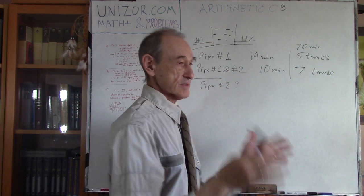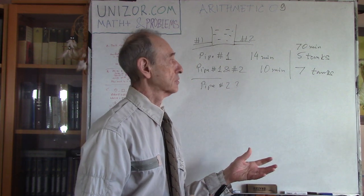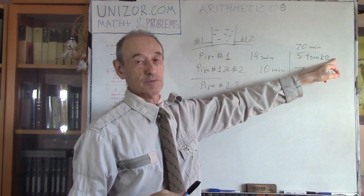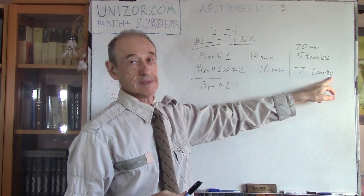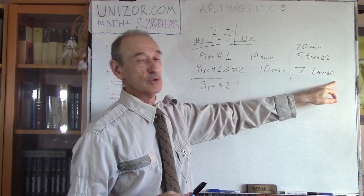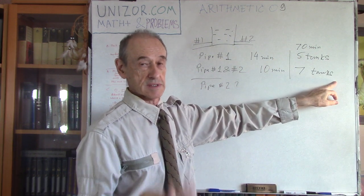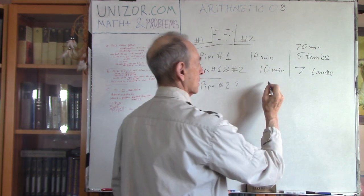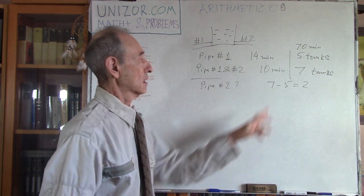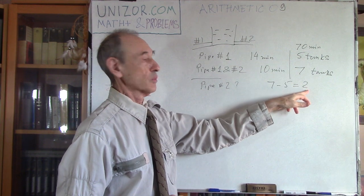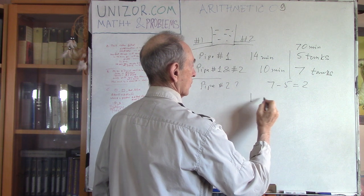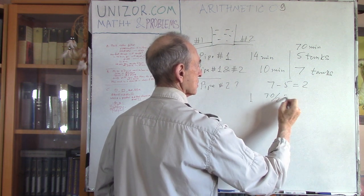You have 70 minutes. One pipe during this time will let through five tanks of water. Both pipes, seven tanks of water. Well, if one is five and two of them is seven, then the second pipe contributes only seven minus five, which is two tanks. So, in 70 minutes, the second pipe alone will empty two tanks. So, one tank would be in 70 divided by two, which is 35 minutes.